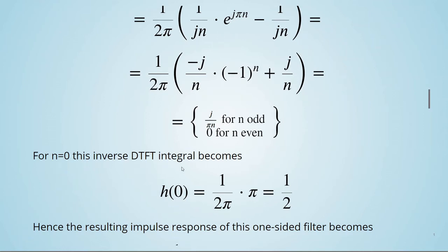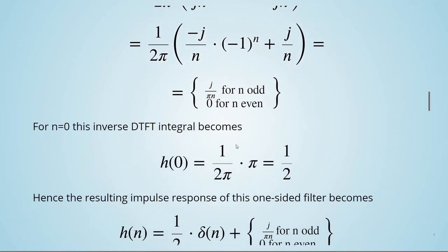For n equals zero, this inverse DTFT integral becomes h of zero, which is 1 divided by 2 pi times pi equals 1 divided by 2.